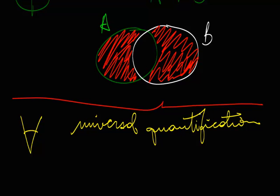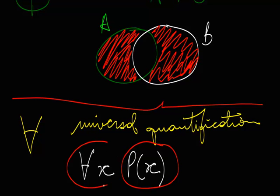Now universal quantification would be used in something like this. So if you were to say, this is the way you read this, for all x, the property x. So basically what this is saying is that this property here will be true for all x. So whenever you have an element x, the property x will be true.